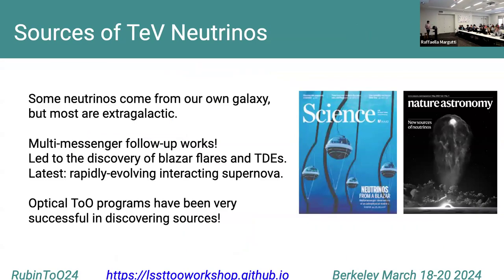What do we know now? Some neutrinos come from the galaxy, but most are extragalactic. More specifically, some come from the active galaxy NGC 1068, and all other indications of neutrino origins have come from multi-messenger follow-ups: a neutrino alert comes in, telescopes point, survey the sky, and identify possible electromagnetic counterparts. We have, for example, neutrinos from the blazar TXS 0506+056, and from the optical, two tidal disruption events and more recently a rapidly evolving interacting supernova. Optical TOO programs have been very successful at identifying compelling candidate neutrino sources. There are already many telescopes doing this: ASAS-SN, DECam, PANSTARRS, TOMO-e Gozen, and ZTF.